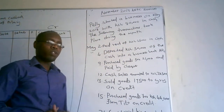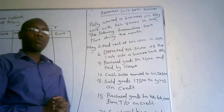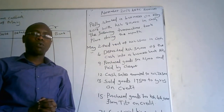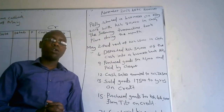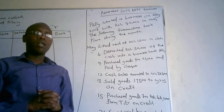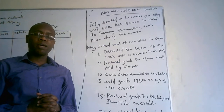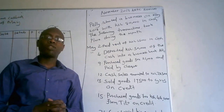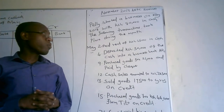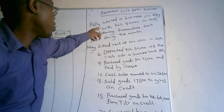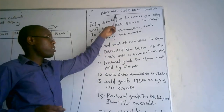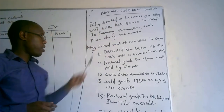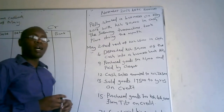Welcome to our revision today. We are going to have a discussion on a two-column cash book. A two-column cash book contains two columns just like the name suggests: the cash column and the bank column. We are going to do a revision on November 2018, which is the next revision part of the past paper. The question is going to read as follows.